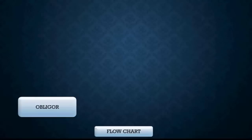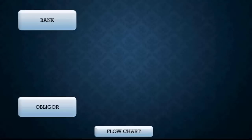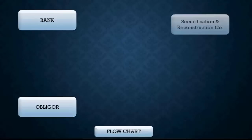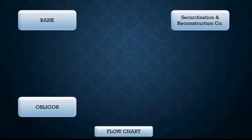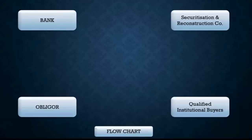The next component in this flow chart is the bank. Because when we are talking about the securitization and reconstruction of financial asset, that financial asset is basically the debt of the bank. The bank gives out loans, and when it is not able to recover its loan, that is the time when the securitization and reconstruction company stands in the frame. So the next component is the securitization and reconstruction company, and the fourth and last component is the qualified institutional buyers. The borrowers are known as the obligor and the bank is known as the obligator — the one giving away the loan.